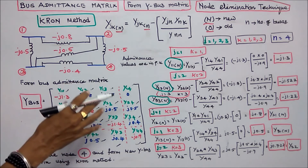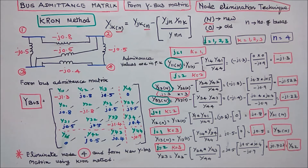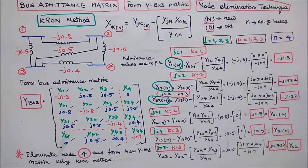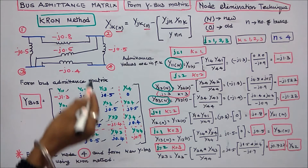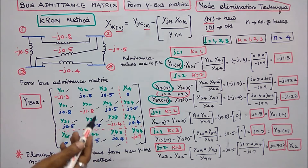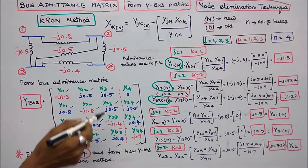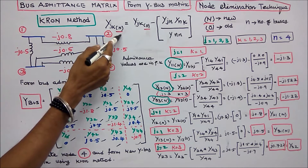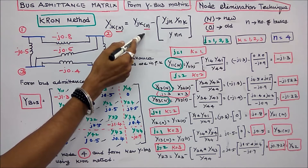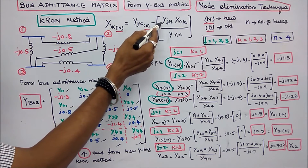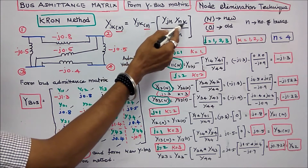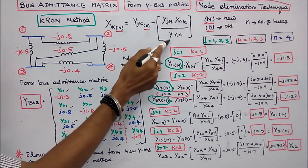This completes the bus admittance matrix for the system. The second question is to eliminate node 4 and form a new Y-bus matrix using Kron's reduction method. If we eliminate node 4, we get a 3×3 matrix. The Kron's method formula is: Y_JK(new) = Y_JK(old) minus Y_JN times Y_NK divided by Y_NN.